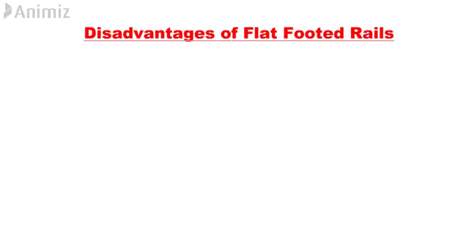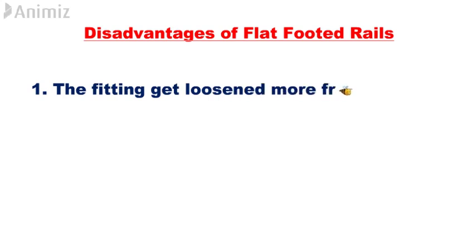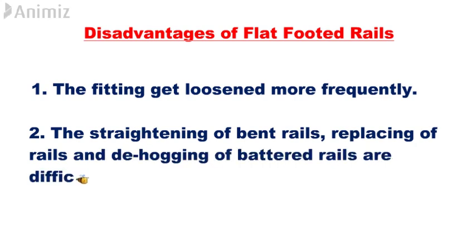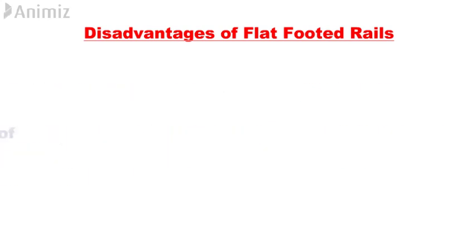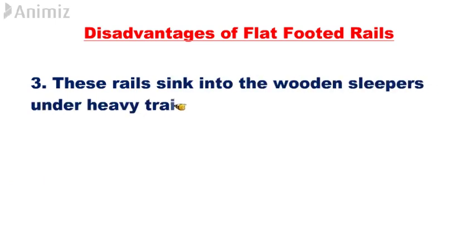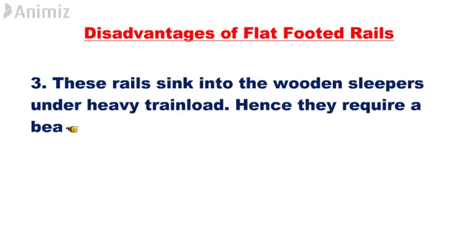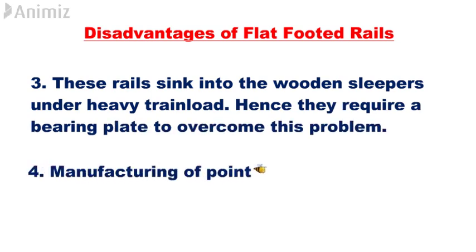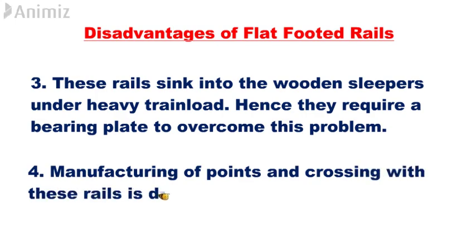Disadvantages of flat-footed rails: 1. The fittings get loosened more frequently. 2. The straightening of bent rails, replacing of rails, and dehogging of battered rails are difficult. 3. These rails sink into the wooden sleepers under heavy train load, hence they require a bearing plate to overcome this problem. 4. Manufacturing of points and crossings with these rails is difficult.